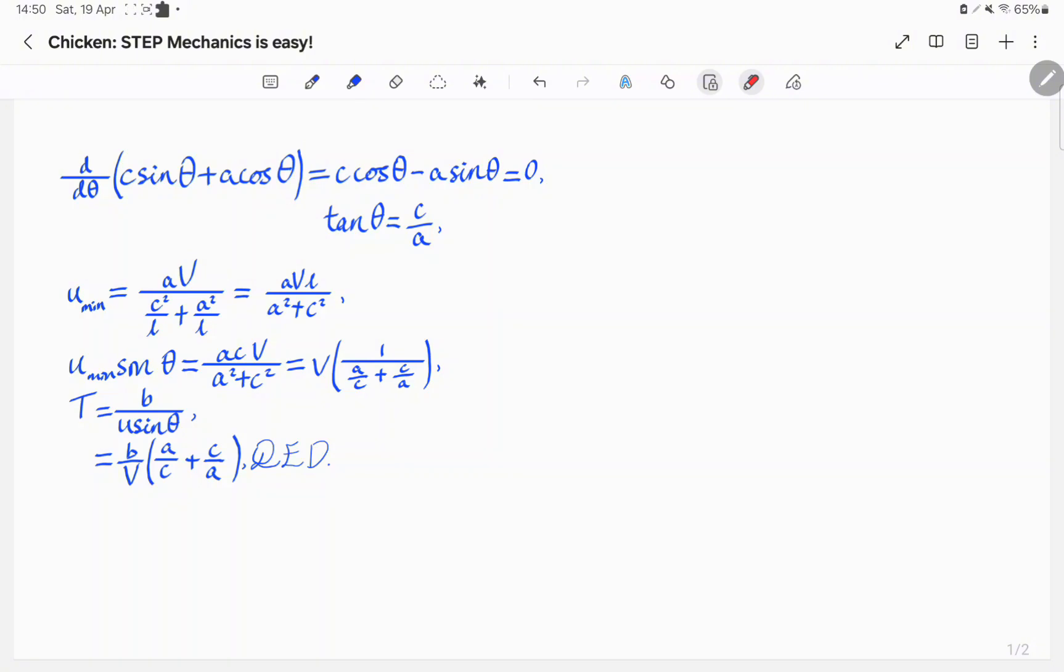From the diagram above, we can substitute this value of theta back in, and we will have the minimum value of U is equal to AV over C squared over L plus A squared over L, and this is equal to AVL over A squared plus C squared. Multiplying this by sine theta gives us that U sine theta is equal to ACV over A squared plus C squared. This is equal to V of 1 over A over C plus C over A.